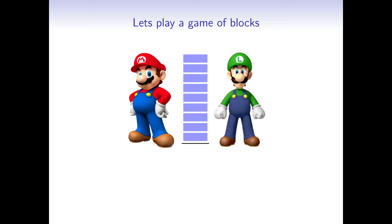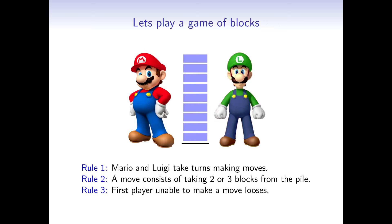Let's do this by examining a game. Mario and Luigi have a pile of 9 blocks. And this is how the game works. Mario and Luigi take turns making moves. A move consists of taking 2 or 3 blocks from the pile. And the first player that is unable to make any move loses.